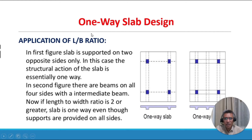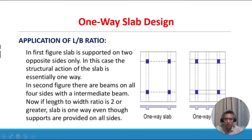Application of L/B ratio: in the first figure, the slab is supported on two opposite sides only — in this case the structural action of the slab is essentially one-way. In the second figure, there are beams on all four sides with an intermediate beam. If the length-to-width ratio is two or more, the slab is also one-way even though supports are provided on all sides.